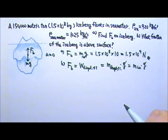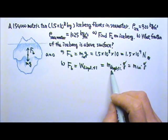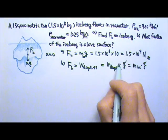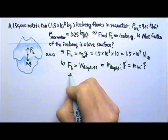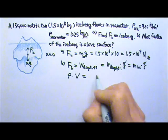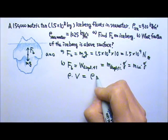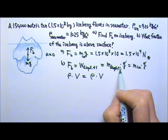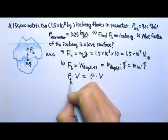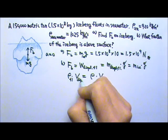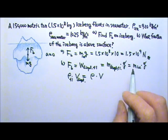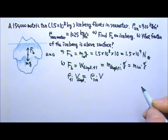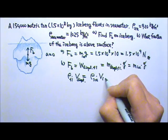If we cancel the g's, the mass of the displaced fluid equals the mass of the ice. The mass of the displaced fluid is the density times the volume. So the mass of the displaced fluid is the density of the fluid times the displaced volume. The mass of the ice is the density of the ice times the volume of the ice.